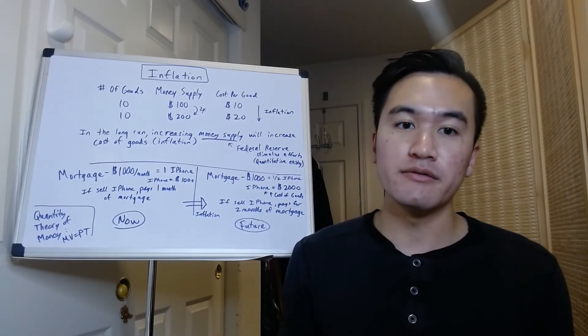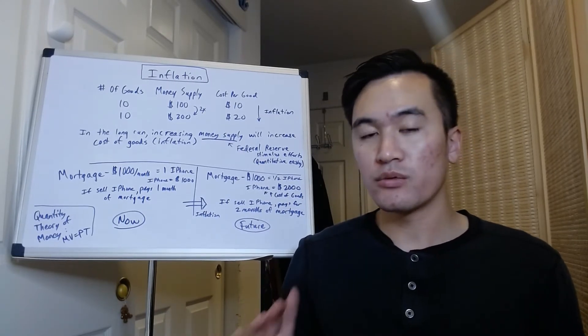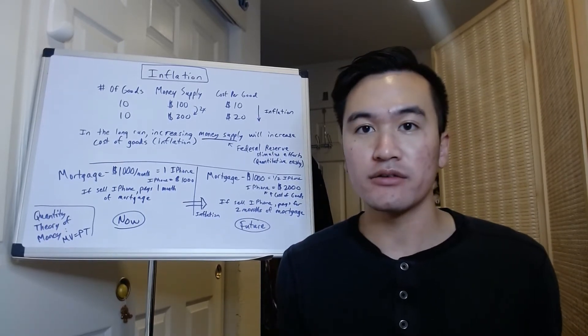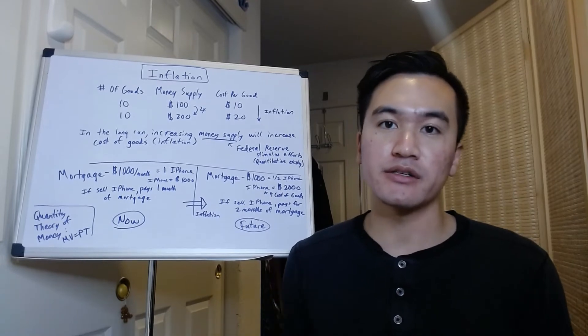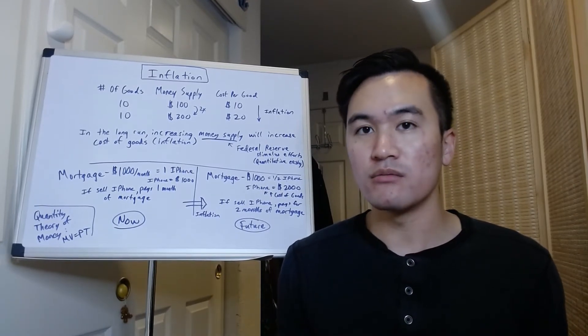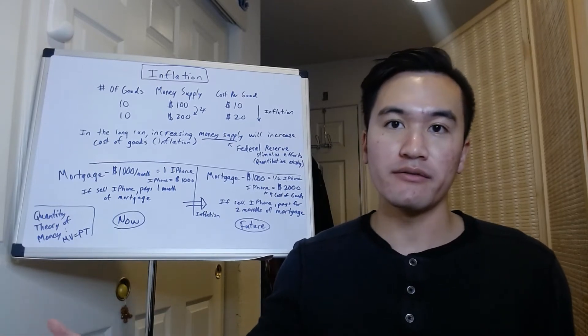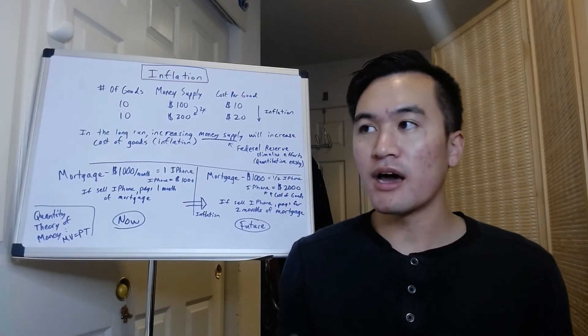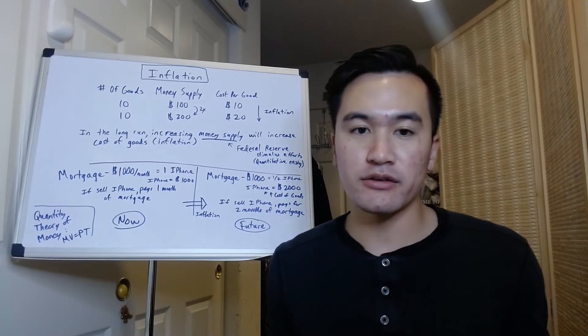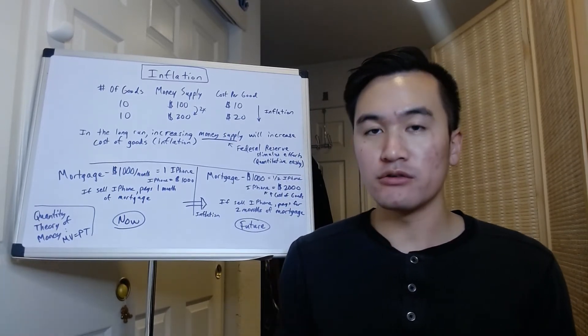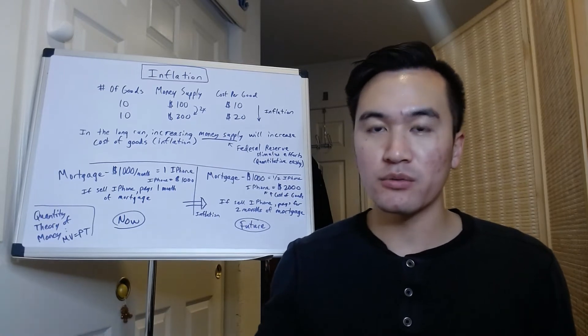Now a real estate investor will buy a house and have a mortgage on that house, a debt to be repaid. Let's say the mortgage on a house you bought is $1,000 per month. Right now an iPhone's worth about $1,000, so if you sell one iPhone, you can pay off one month's worth of your mortgage.